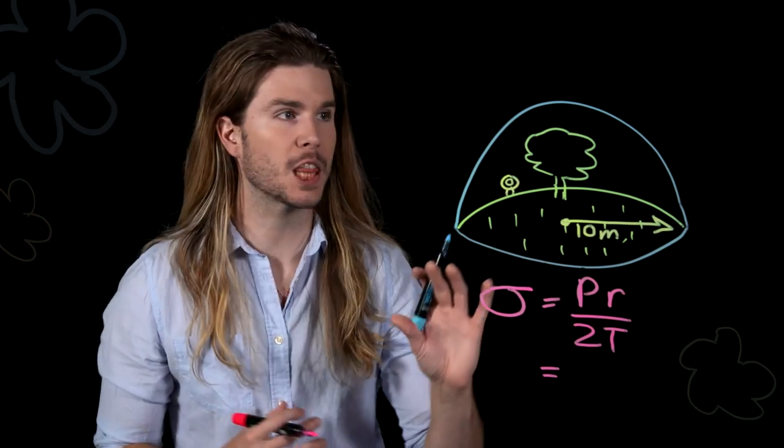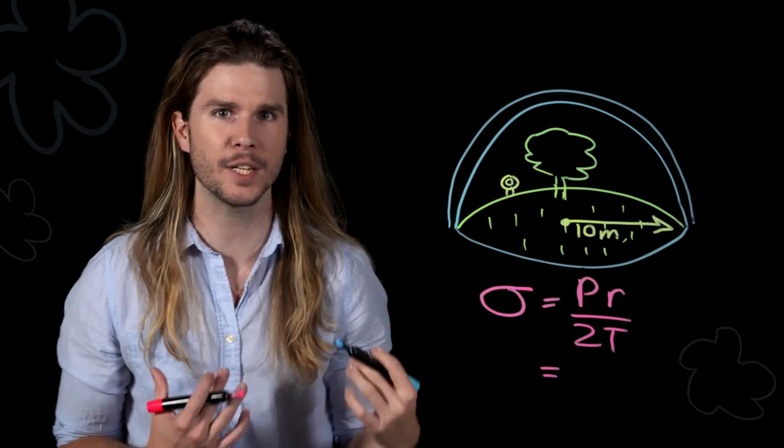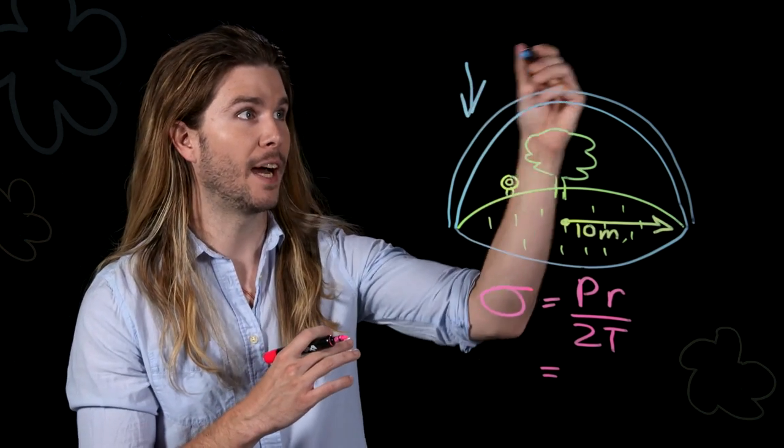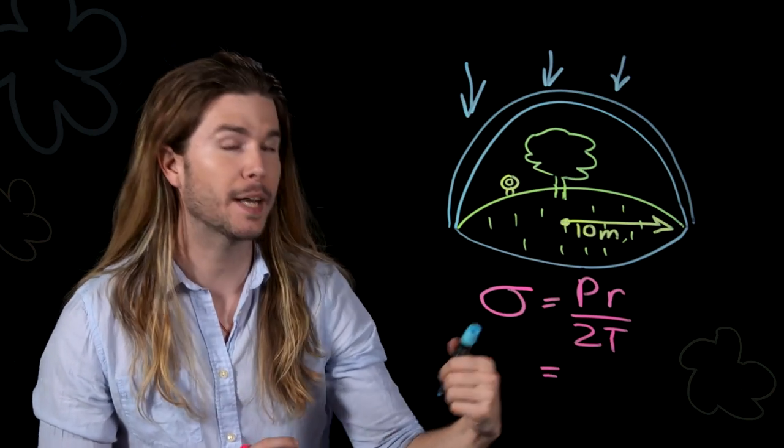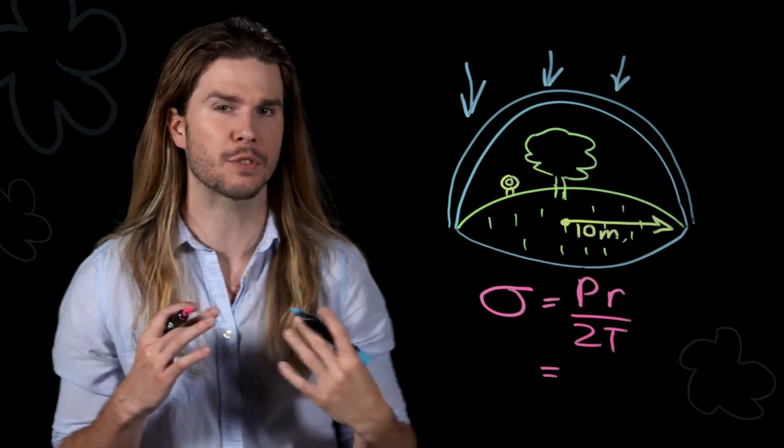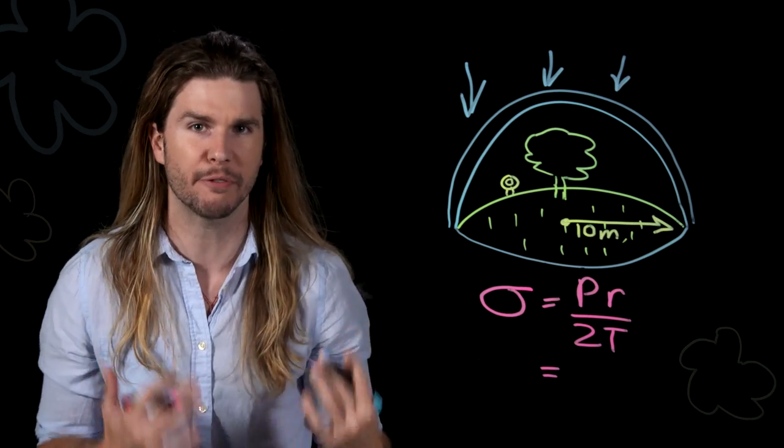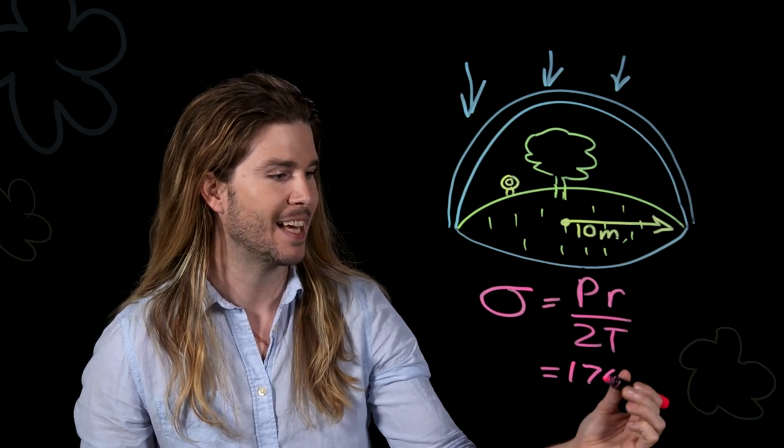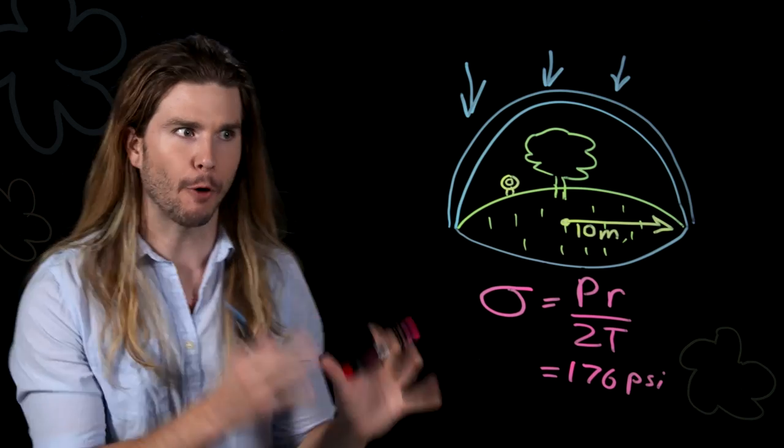The internal stress in a thin-walled spherical object like Sandy's tree dome is equal to the pressure pushing down outside, times the radius of the tree dome, divided by two times the thickness. So if we assume a decent thickness for Sandy's tree dome, maybe like a meter, and then plug in our values that we've already found, we get a total internal stress of 176 PSI, far below our limit.